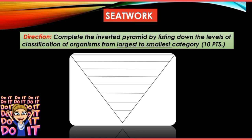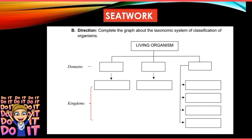For your seatwork, complete the inverted pyramid by listing the levels of classification from largest to smallest categories — that is Part 1, worth 10 points. For Part 2, complete the graph about the taxonomic system of classification. You may go back to the video to help answer the concept map. That's it for today, thank you and have a nice week.